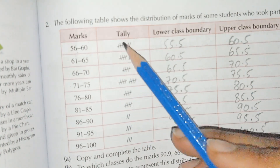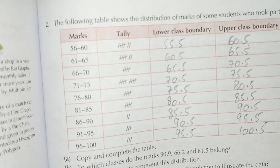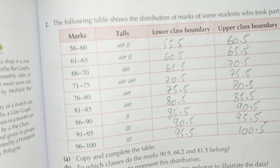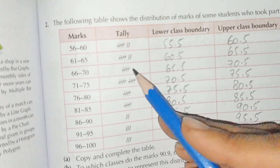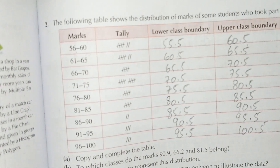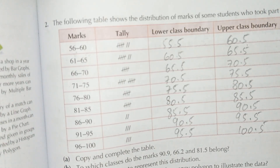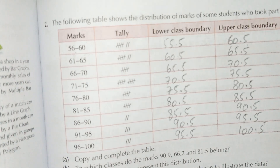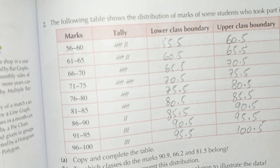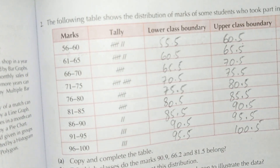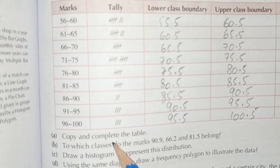Now we write the frequency. The frequency for the first class is seven. The next class is also seven. Then five, five, five, two, three, and three. These are all the frequencies, and we have completed the table for part (a).